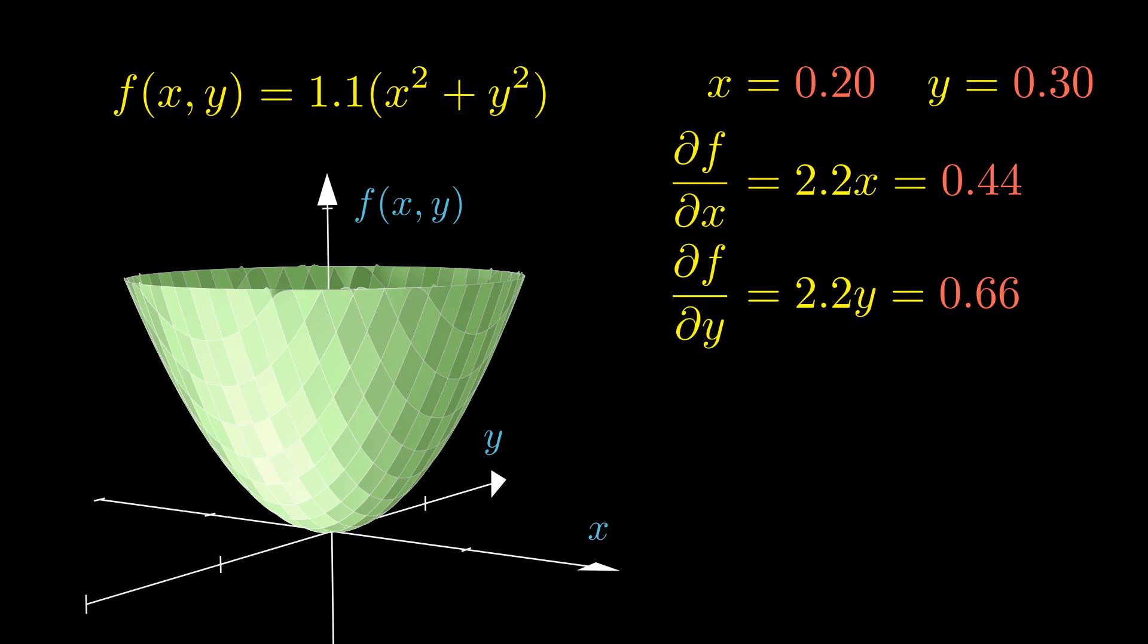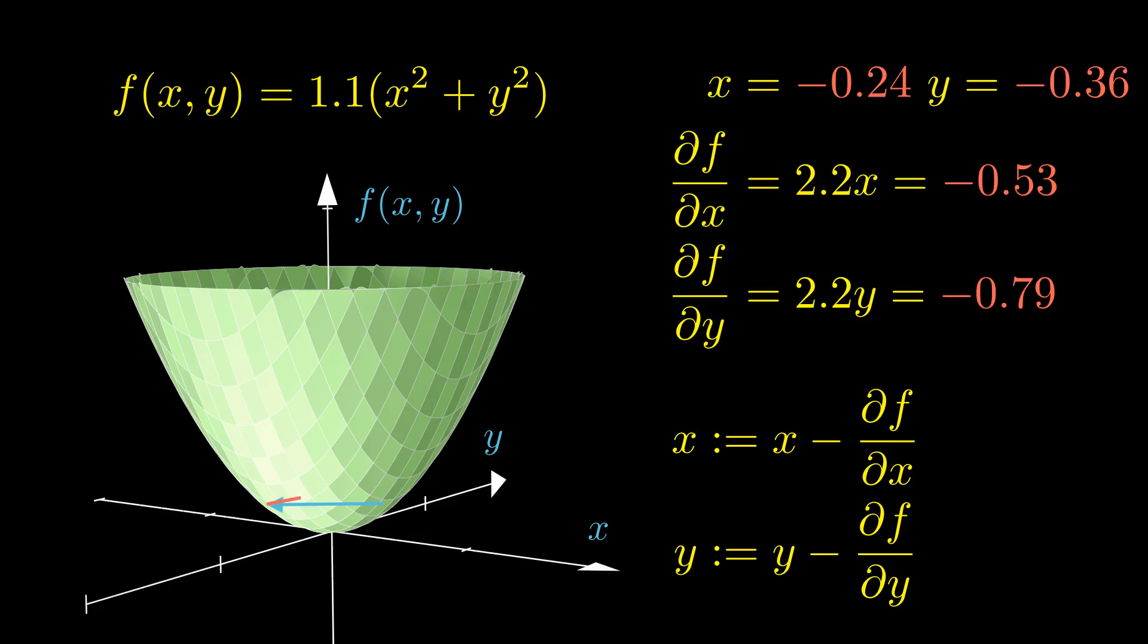Now let's move our point in the direction of the steepest descent, which is equivalent to subtracting the gradient from the current values of x and y. Now we should just keep repeating this step and wait for the algorithm to converge.